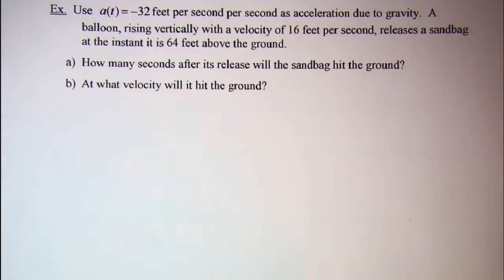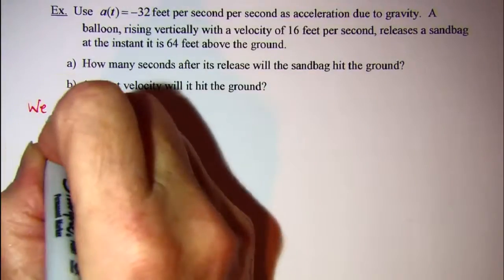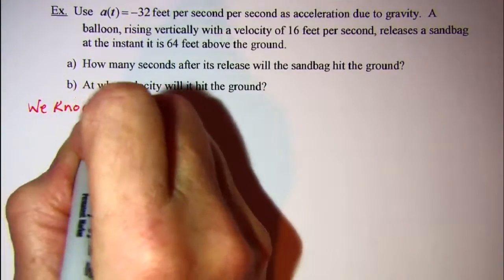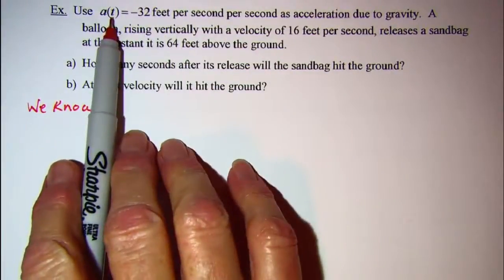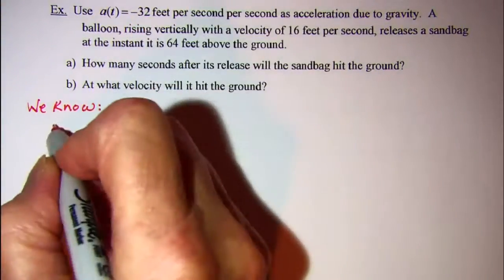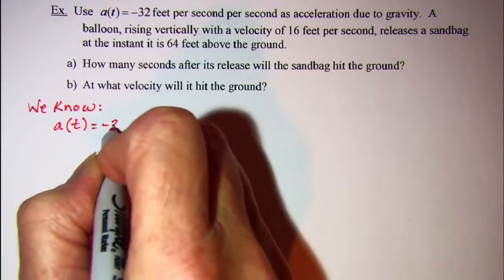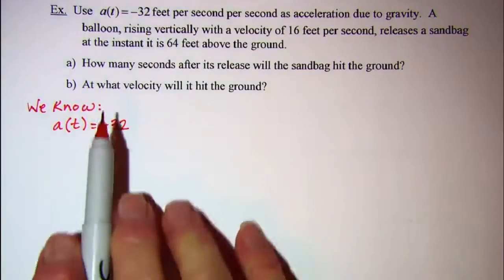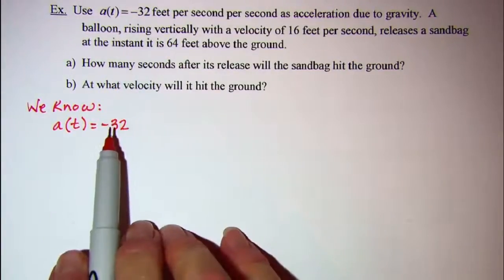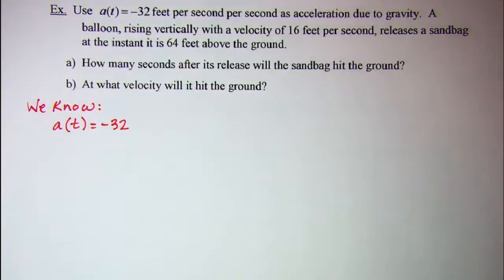The first thing we want to do is write down what we know. We know that a(t) equals negative 32. The reason this is negative is because we're up in the air and falling toward the ground, so our acceleration due to gravity is negative.